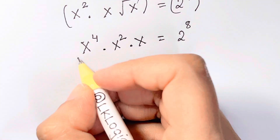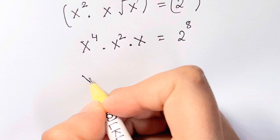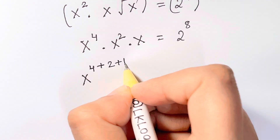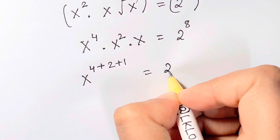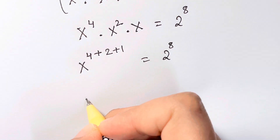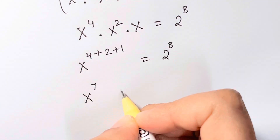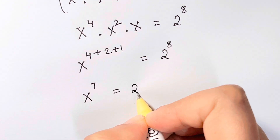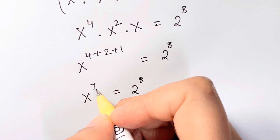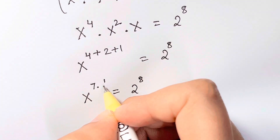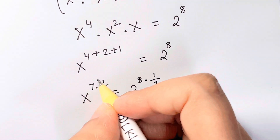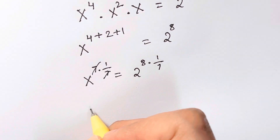Since we have the same base in this multiplication, I'll just add up the powers: 4 plus 2 plus 1 equals 2 to the power of 8. That gives us x to the power of 7 equals 2 to the power of 8. Now I'm going to multiply the exponents by 1 over 7 on both sides, so 7 and 7 cancel.